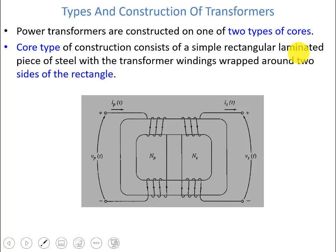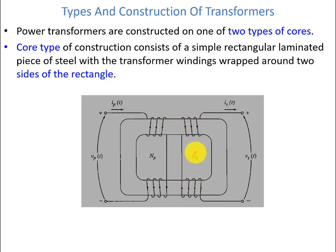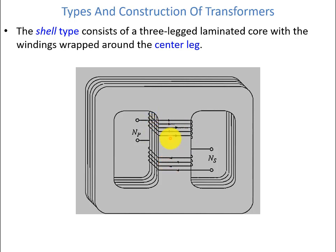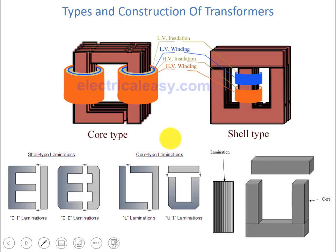The transformer construction uses ferromagnetic cores of two types. In the core type, the primary winding is wound on one leg of the core and the secondary is wound on the same leg — the windings are on the sides of a rectangle. The shell type has a three-leg laminated core where the winding is on the central leg, with primary and secondary windings arranged around it.